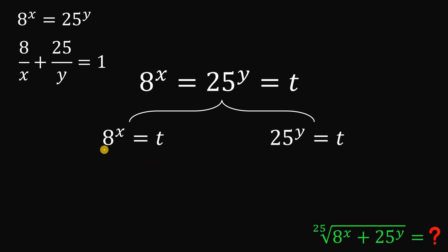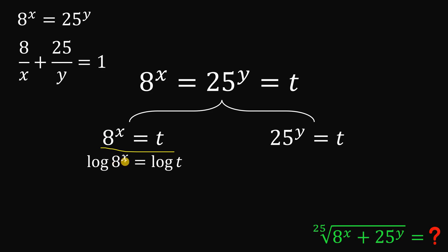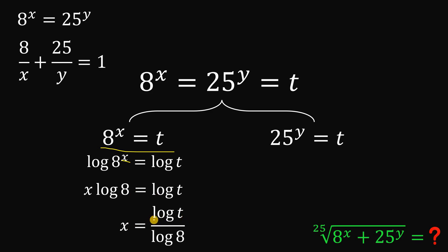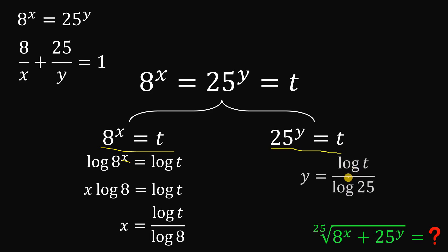So solving for x and y in these two equations: for the first case, take the logarithm on both sides, then bring x to the front. So x times logarithm of 8 equals logarithm of t. Divide both sides by logarithm of 8, so x equals logarithm of t over logarithm of 8. On the other hand, y in the second equation is logarithm of t over logarithm of 25.